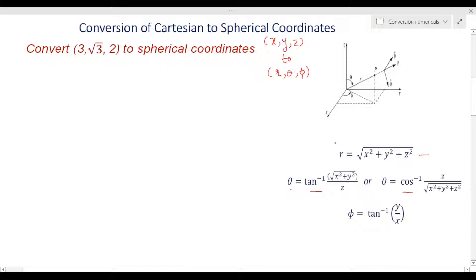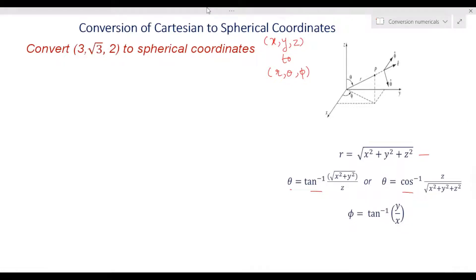These transformation equations are used when you have to find r, theta, phi given x, y, and z. The problem is: the point is given in Cartesian as (3, √3, 2), and you have to find the coordinates in spherical. You just have to apply simple mathematics and know the trigonometric ratios.